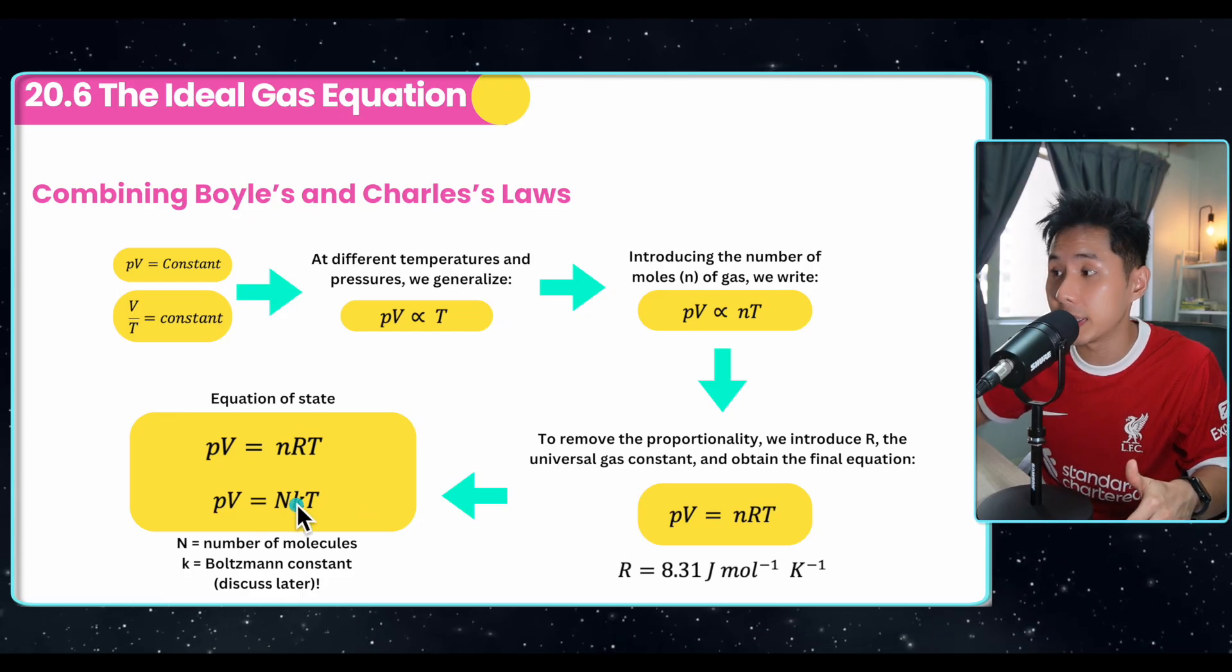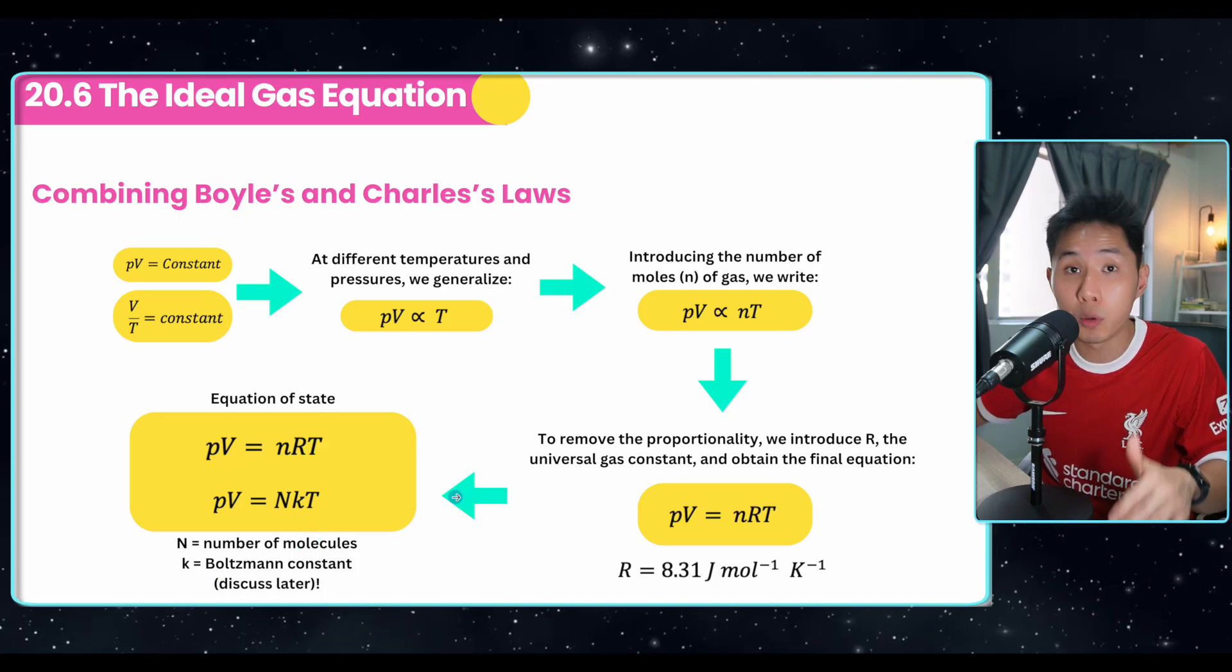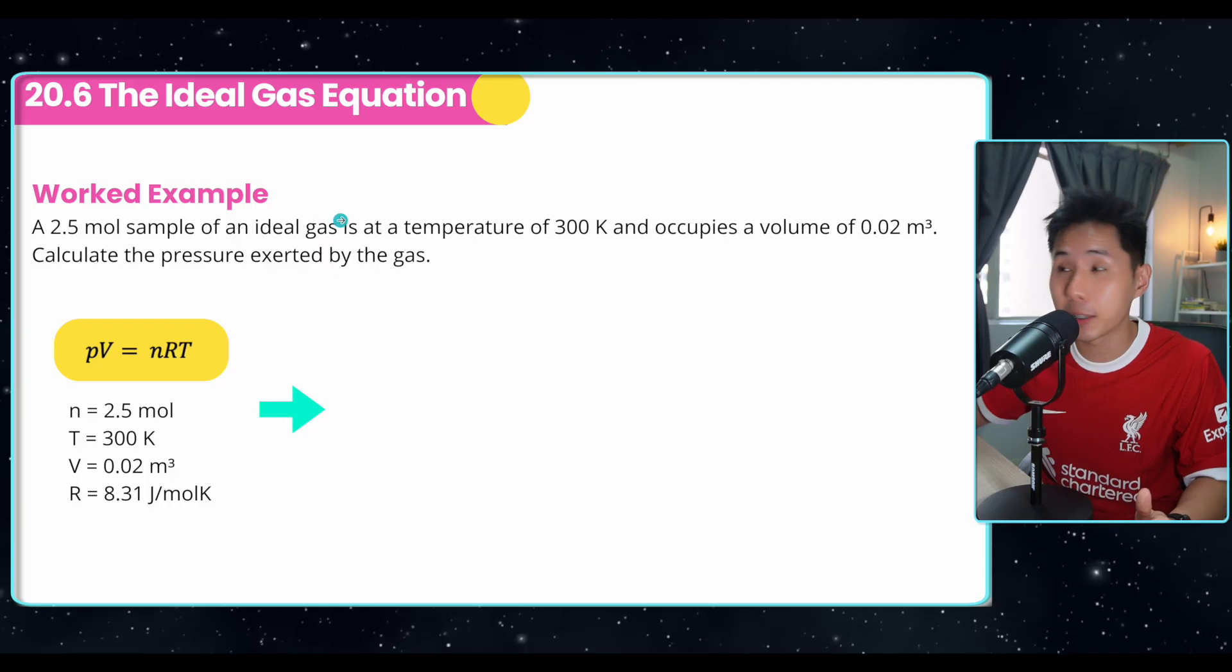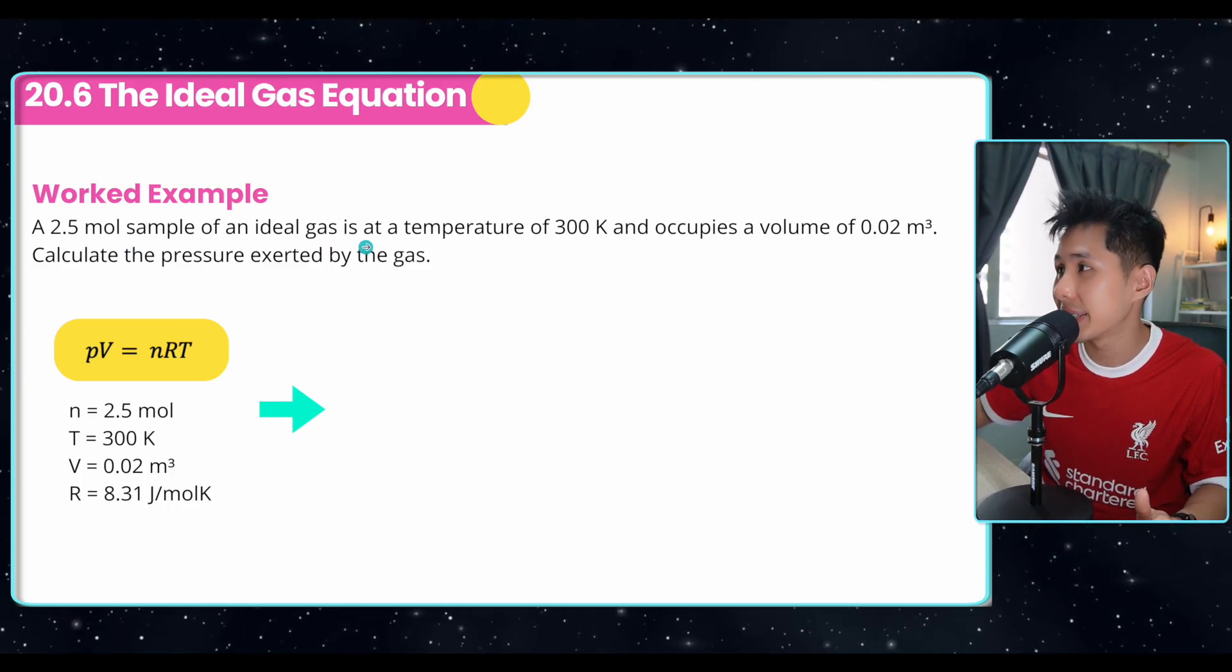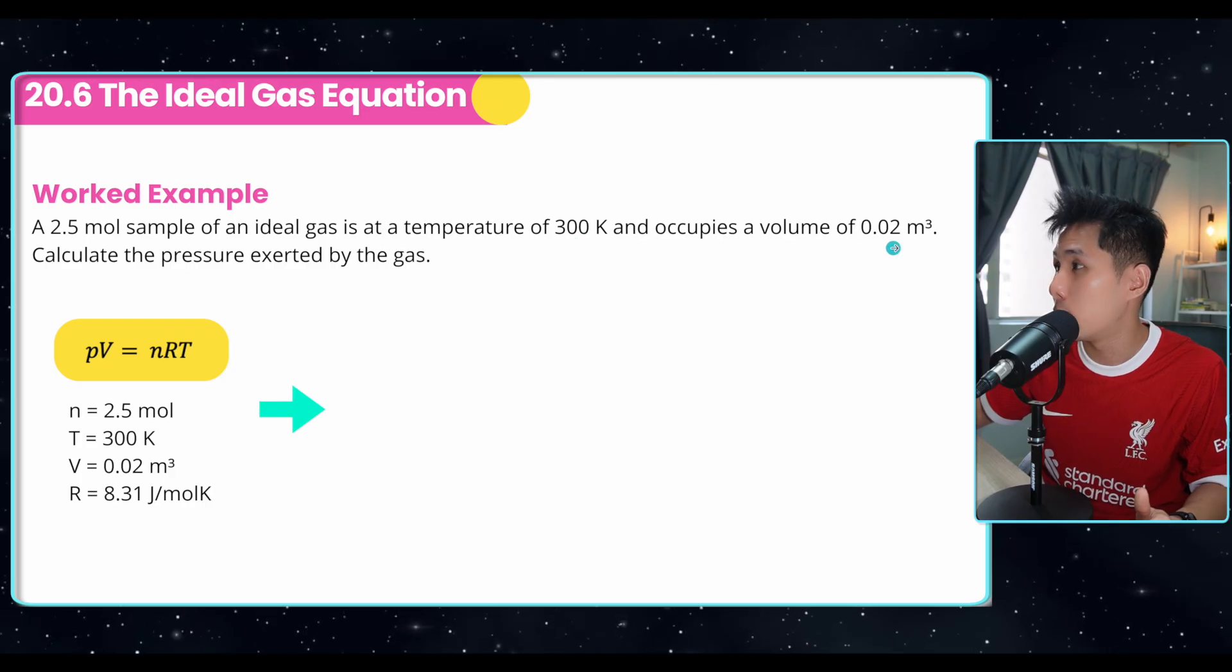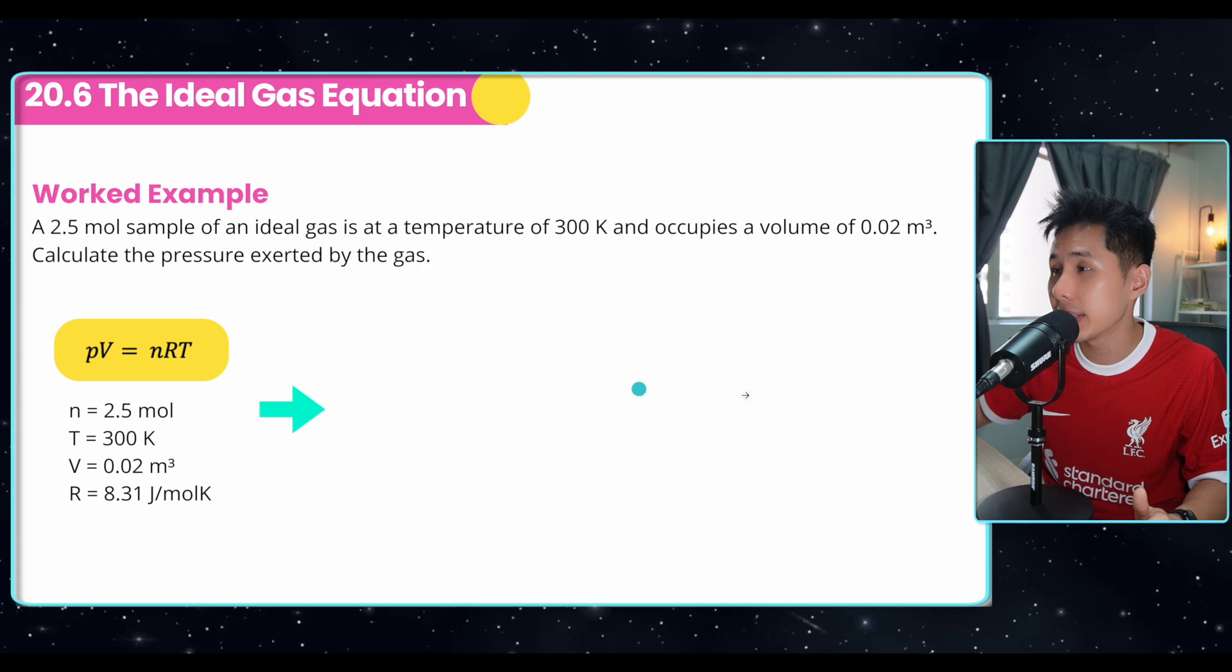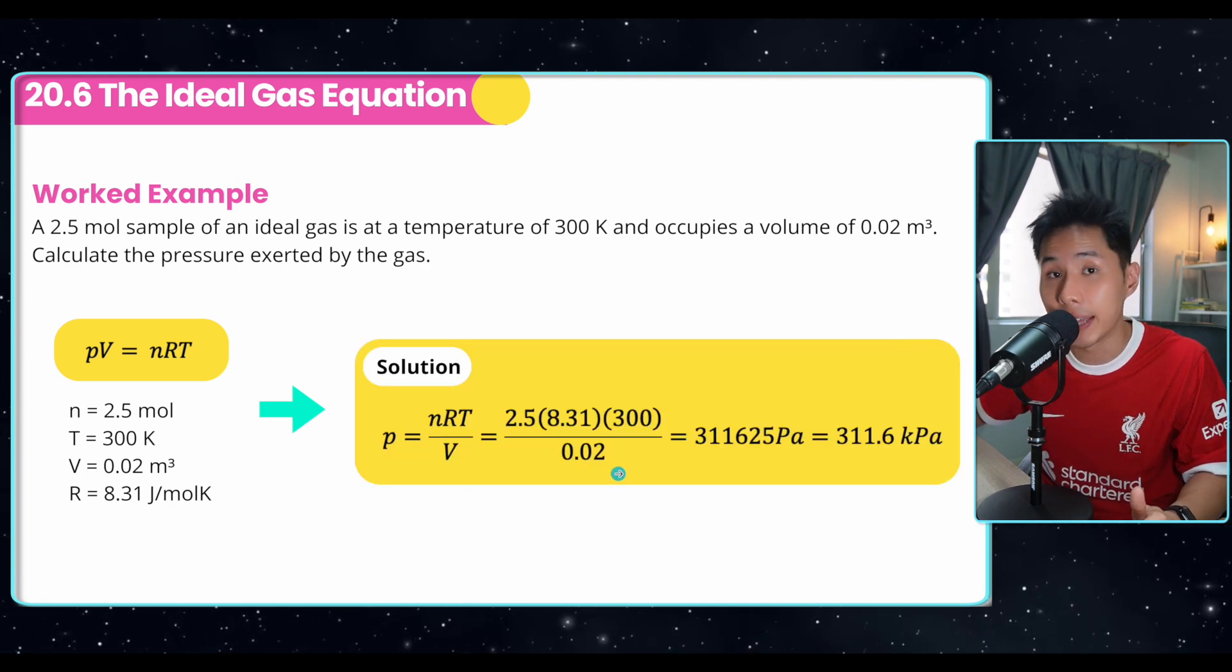We have two equations of state, we'll talk about this in a while. But for now, just know that the n is the number of molecules. And the Boltzmann constant is also something we'll cover in a while. So using this ideal gas equation, we can start solving some question, 2.5 mol of gas is at a temperature of 300, volume, calculate the pressure. So we can use this equation, substitute all the values that we know, and we will have gotten the pressure of the gas.